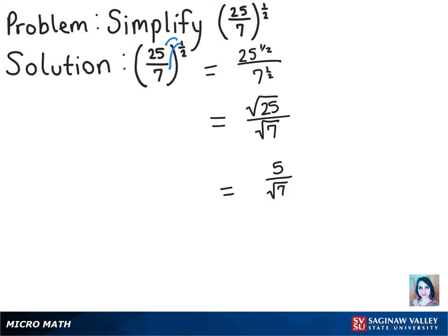However, it's considered improper to have a square root in the denominator of a fraction. So what we're going to do is rationalize the denominator, which means that we want to multiply this fraction by the square root of 7 over the square root of 7, so we can get rid of the square root in the denominator.